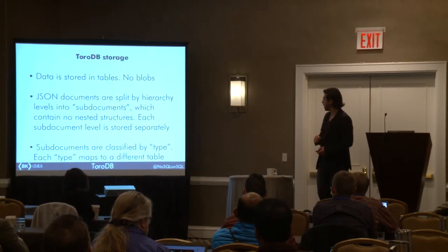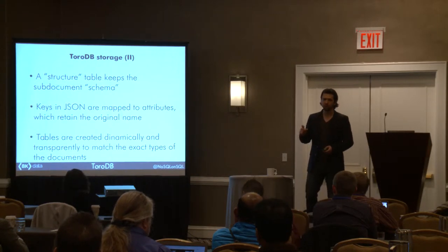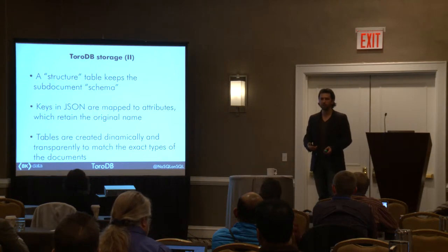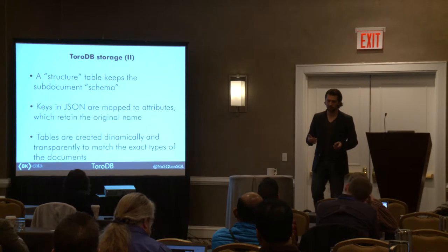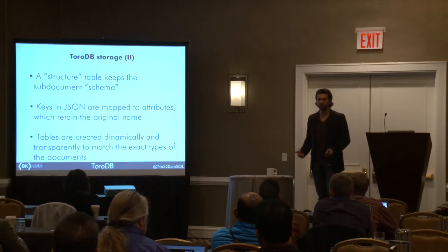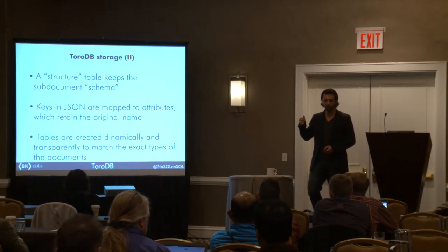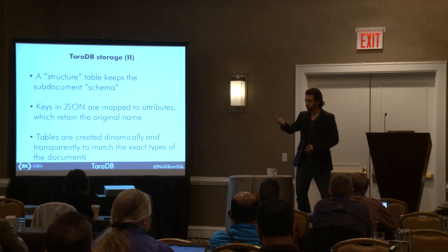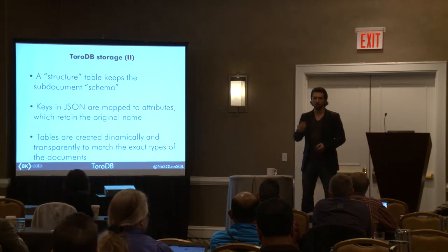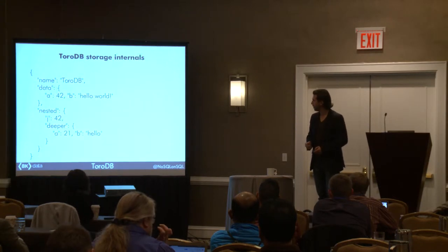The keys are mapped exactly to attributes in the tables, and if needed, tables are created dynamically. There is a final piece to glue this all together, which is what we call the document structure. The document structure is basically the document without data — the keys and the containers, in other words, the arrays and nested objects. It's very short documents even for very large, complex JSON documents. This is how we glue everything together.